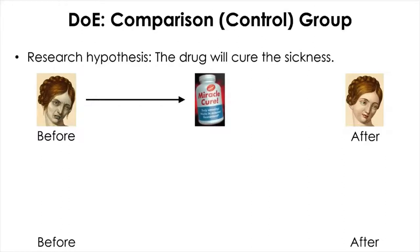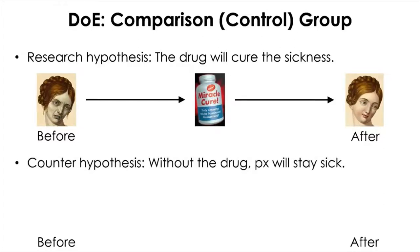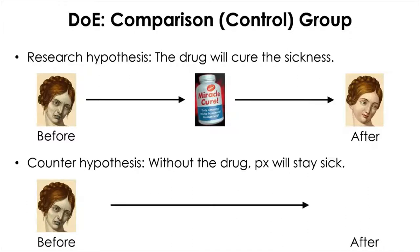So that was our research hypothesis: we give the patient the drug and it looks like it actually treated the patient. But we also have a counter hypothesis. If our research hypothesis is correct, then if we remove the drug, the patient should stay sick. So here is our patient again—we just leave them without giving them anything, and they should stay sick. This way, we can make sure that it is the drug that cured the disease.